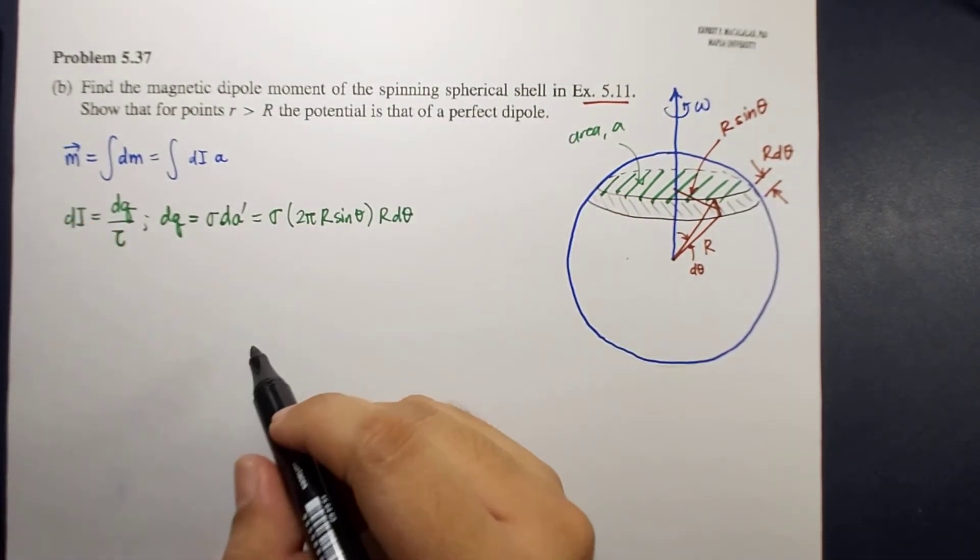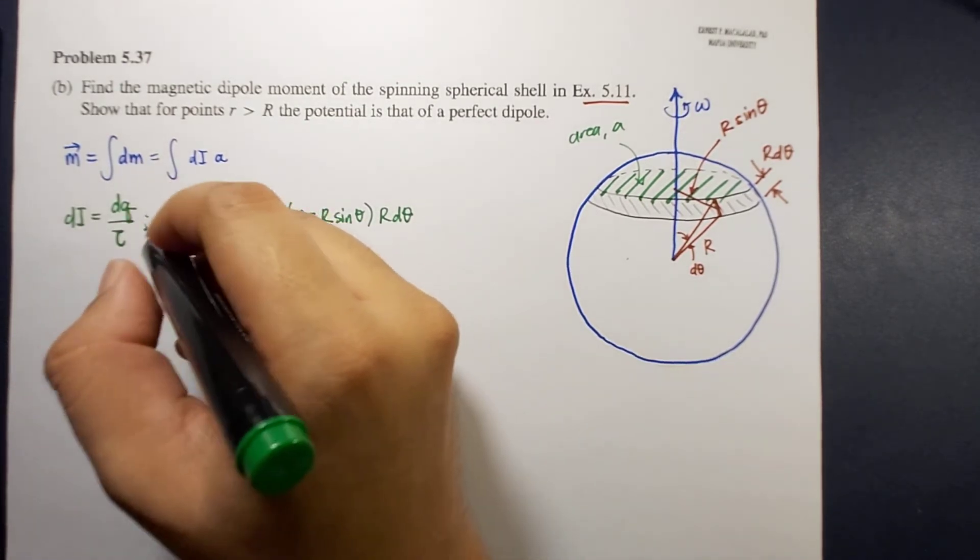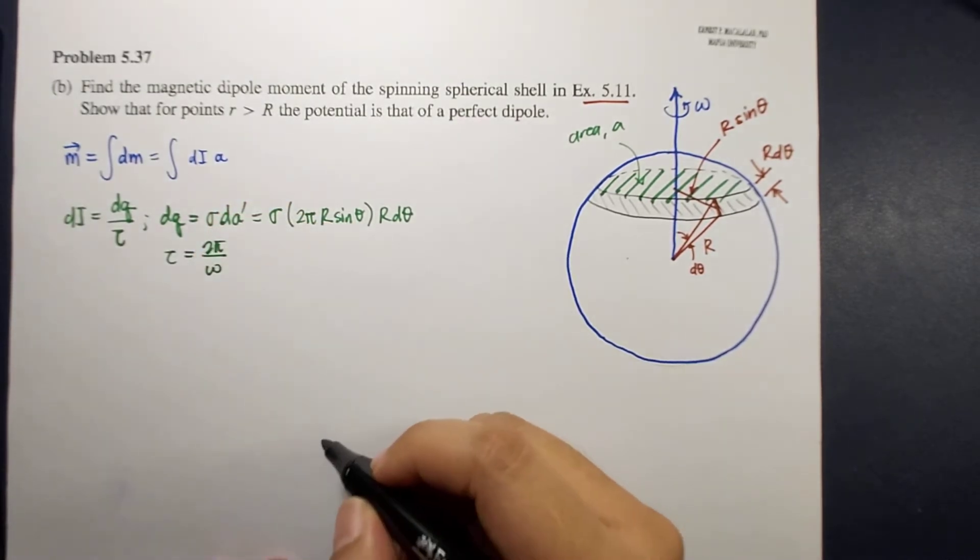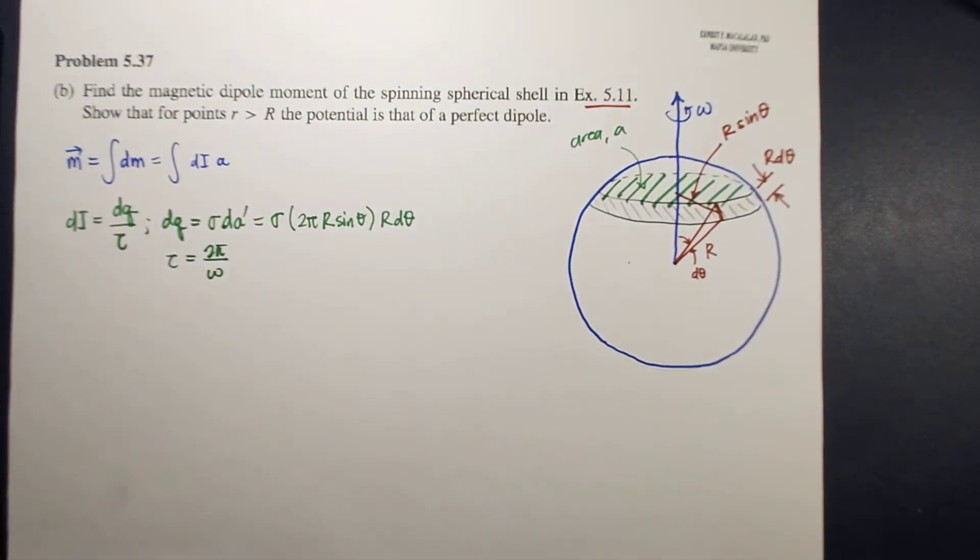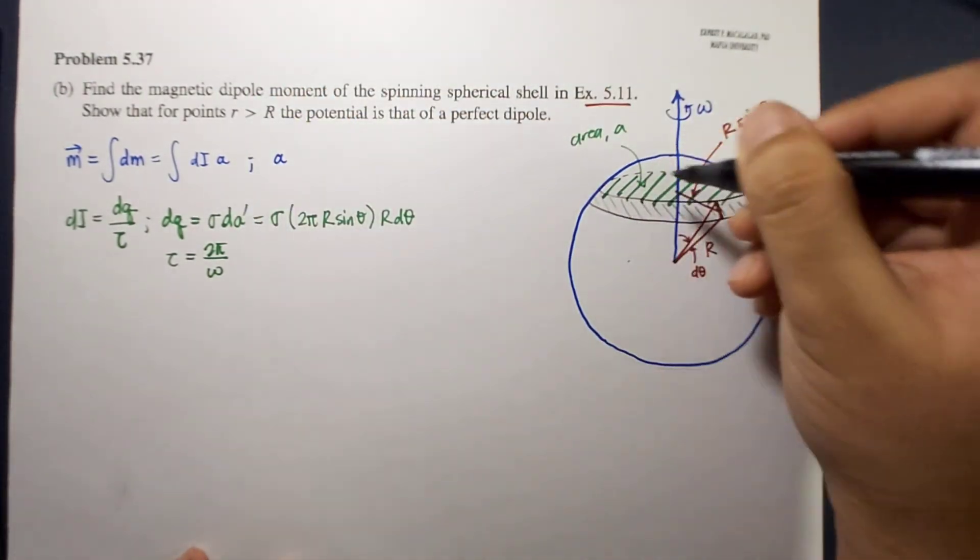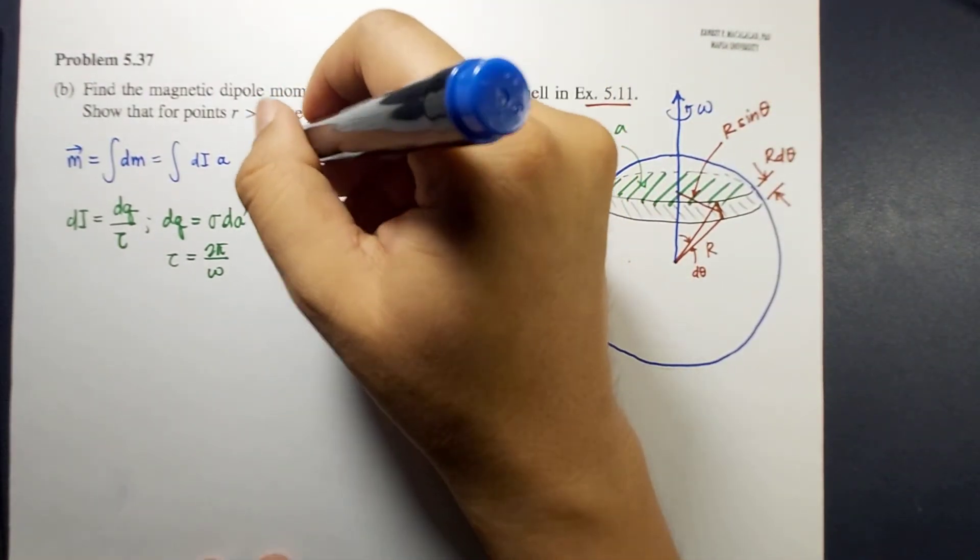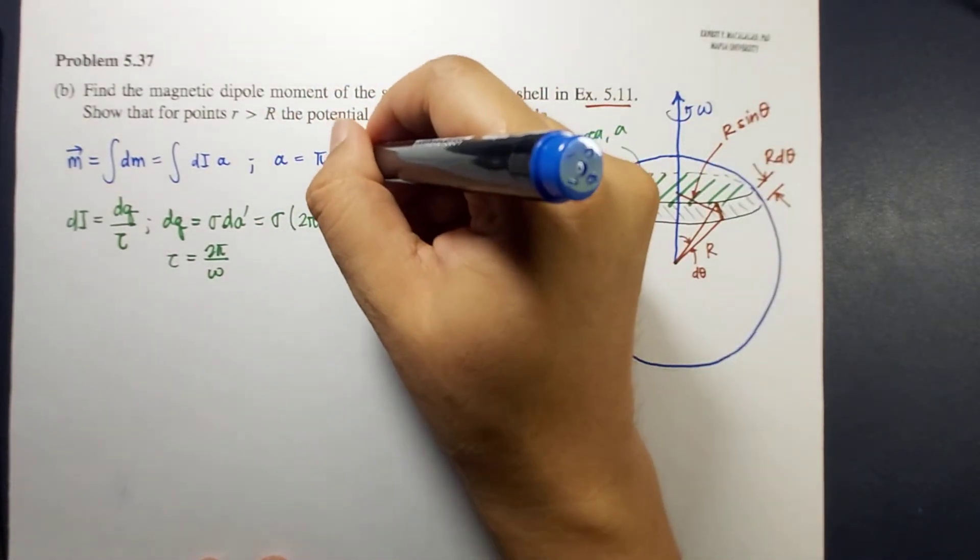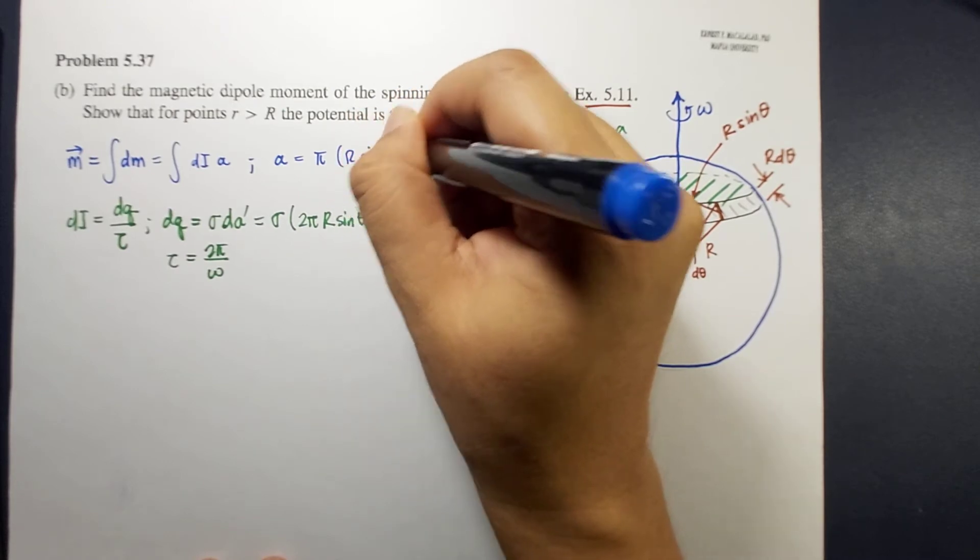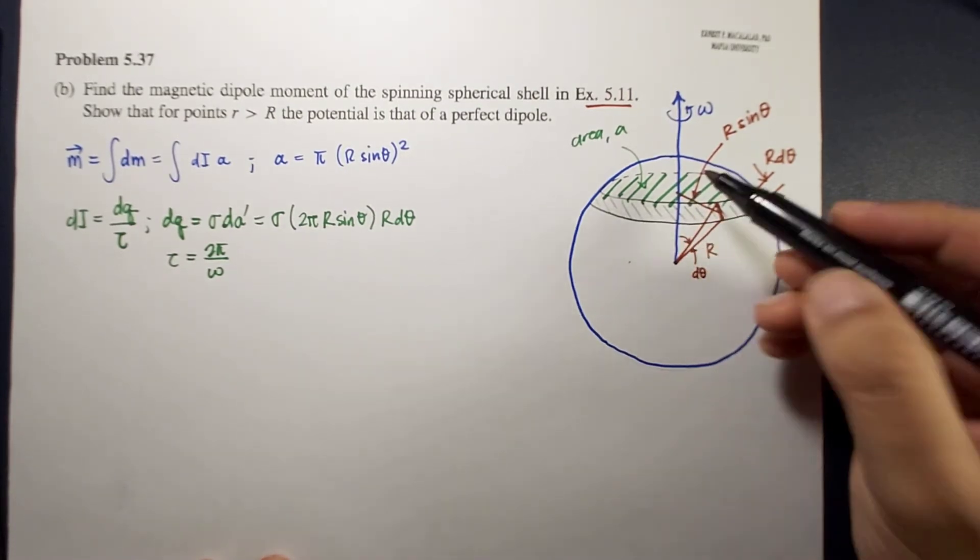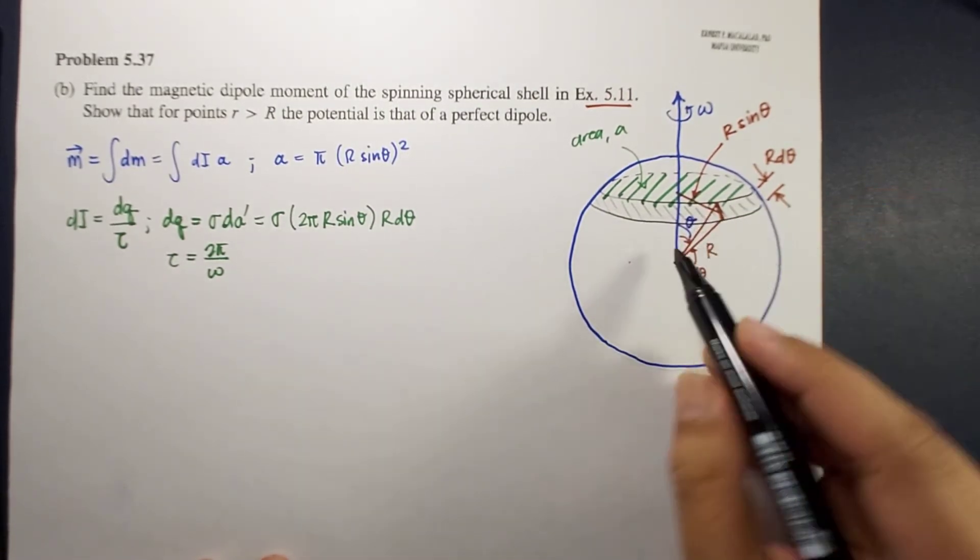The period, on the other hand, would just be 2π over omega. Also, the area element, or the area of the circle, is π r sin θ squared. And this changes as your theta changes.